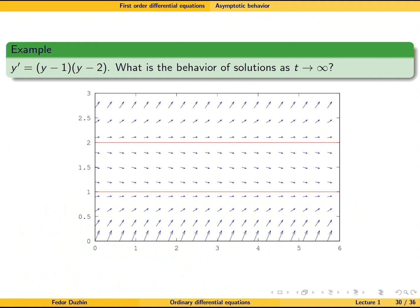And here is the more precise direction field of this differential equation, and you see that it is indeed true. So whenever our initial point is here, then it approaches 1, or here is also approaching 1. But if it is above 2, then it's going to go to infinity.